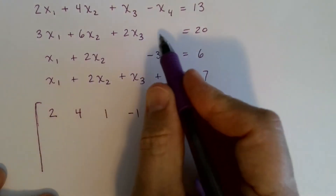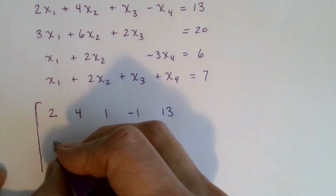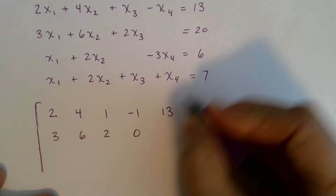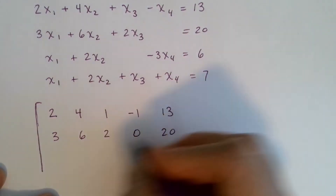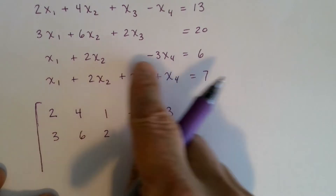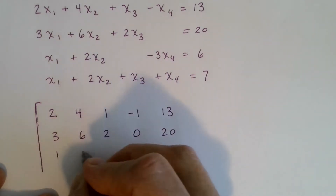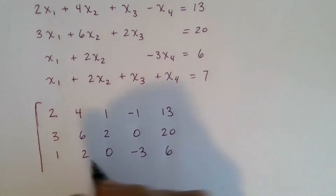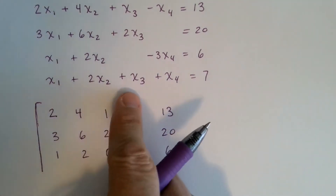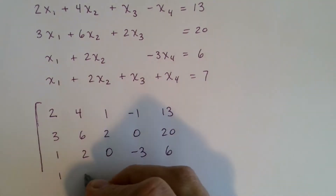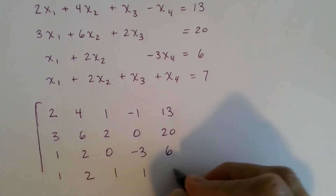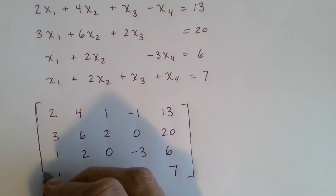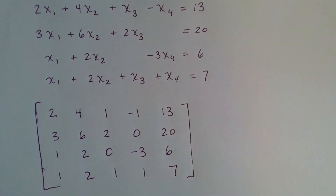The second row is 3, 6, 2, and then there's no x sub 4, so we put a 0 there — coefficient of 0 — equals 20. Then 1, 2, 0, negative 3 equals 6. And then 1, 2, 1, 1, 7. This is the augmented matrix for the system, and this is what we operate on when we do these elimination techniques.